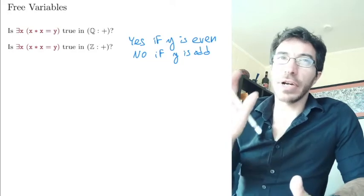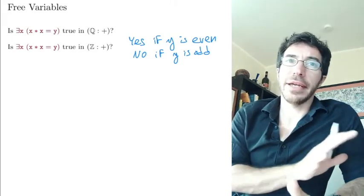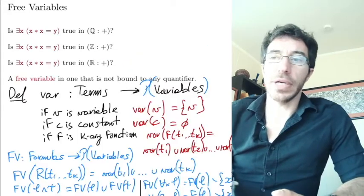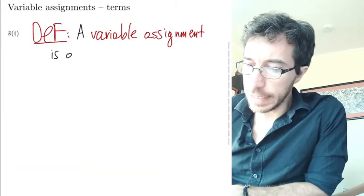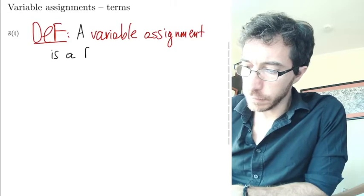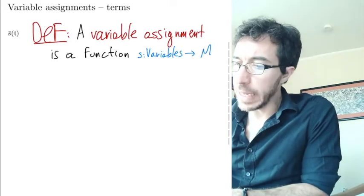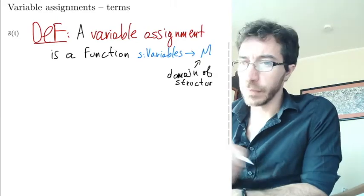So now the variable assignments in this case is going to be assigning elements. So let's do that. So a variable assignment is a function that goes from a set of variables to the domain of our structure.